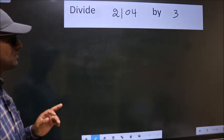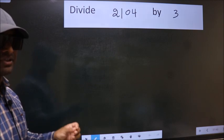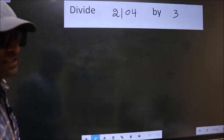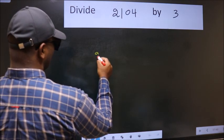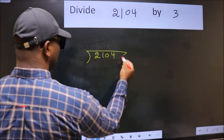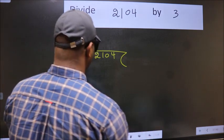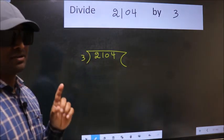Divide 2104 by 3. To do this division, we should frame it in this way. 2104 here, 3 here. This is your step 1.